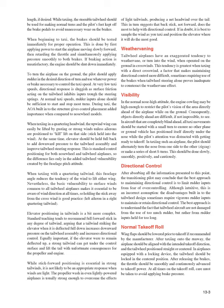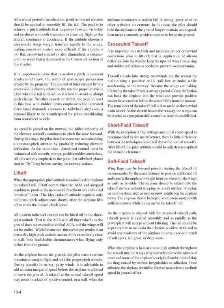Wing flaps should be lowered prior to takeoff if recommended by the manufacturer. After taxiing onto the runway, align the airplane with the intended takeoff direction and center the tailwheel — locking it if a locking device is equipped. After releasing the brakes, advance the throttle smoothly to takeoff power, taking care to avoid brake pressure throughout the roll. After a brief acceleration, apply positive forward elevator to smoothly lift the tail to an attitude that improves forward visibility. If the attitude is excessively steep, weight transfers rapidly to the wings, making crosswind control more difficult.